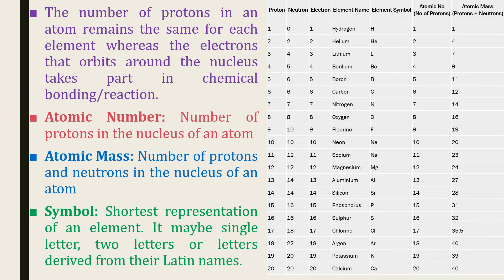Here is another example. For an element, the atomic mass is 11 and its atomic number is 5. How will you find the number of protons and neutrons? Since the atomic number is 5, the number of protons is also 5. The atomic mass is 11, so the number of protons and neutrons together is 11. Since protons are 5, the number of neutrons is 11 minus 5, that is 6. The element is boron.